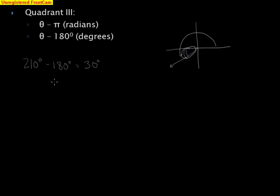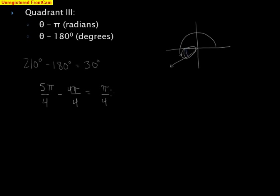We can do one example in radians — 5 pi over 4. By rule for quadrant 3, I'm going to take that angle and subtract pi from it. Getting a common denominator: 5 pi over 4 minus 4 pi over 4, my reference angle winds up being pi over 4. And again, that's an acute angle — that's 45 degrees in degree mode for the pi over 4 equivalent — so I know that is an acute angle for the reference angle.